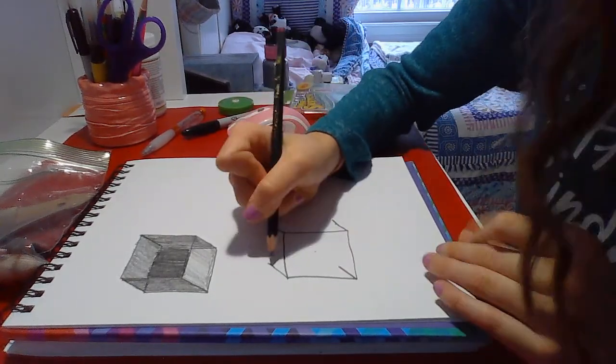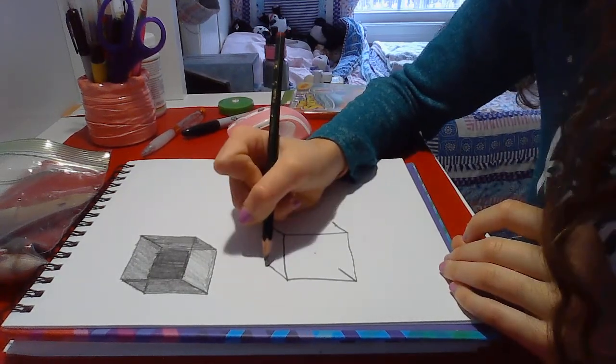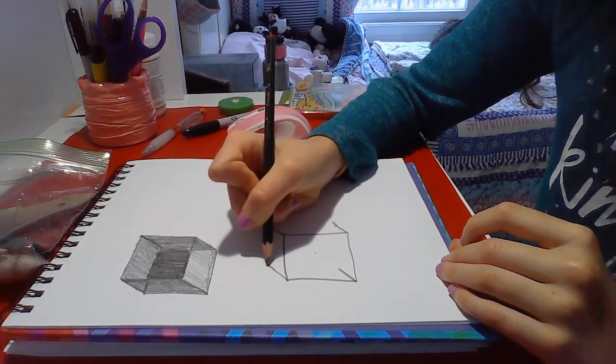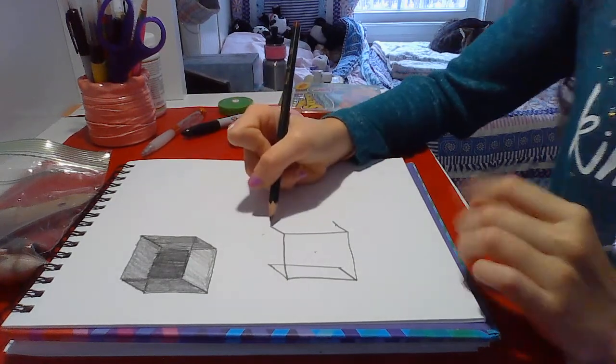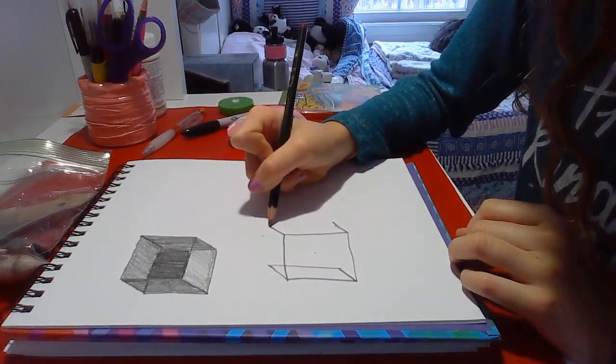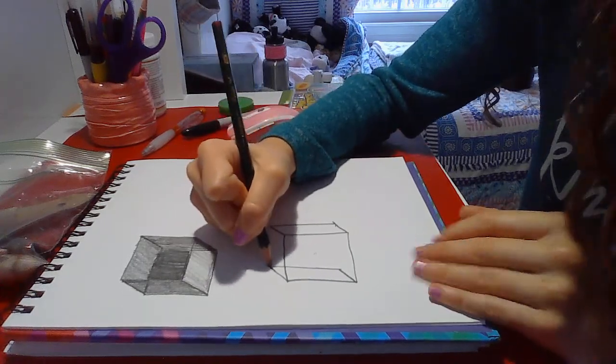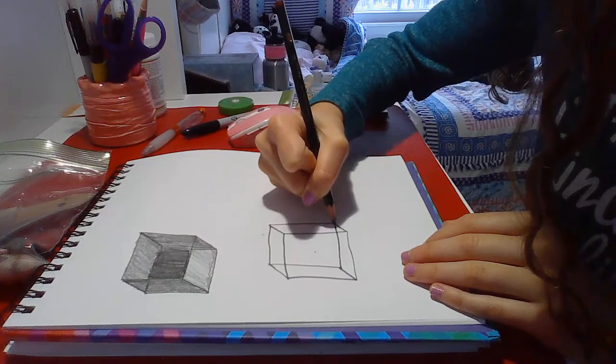And then I'm going to connect the corners of the lines that I drew on the left side. Connected them and I'm just going to do the same thing with the corners on the right side. Then I'm going to connect these top corners and these bottom ones.